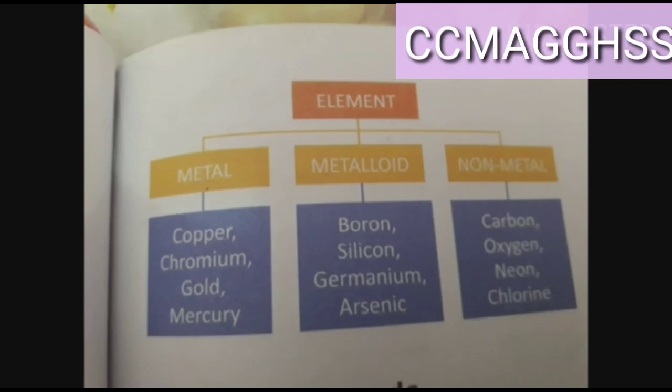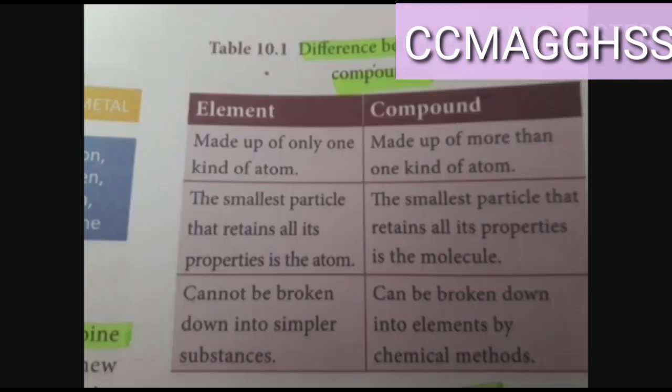Now we can see the difference between elements and compounds. An element is made up of only one kind of atom. A compound is made up of more than one kind of atom. The smallest particle of an element retains all the properties of the element. An element cannot be broken down into a simpler substance, but a compound can be broken down into elements by chemical methods. Elements and compounds are both very important concepts to understand.